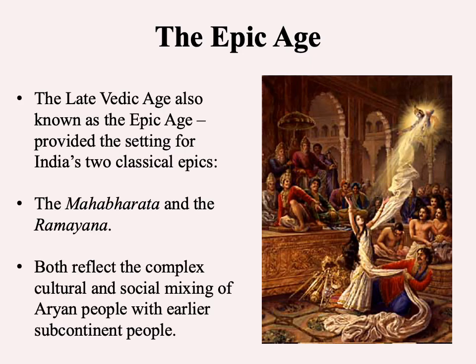The late Vedic age is also sometimes referred to as the epic age, partly because two of the most important epics in Vedic literature are set during this period: the Mahabharata and the Ramayana. The Mahabharata is one you can actually find in bookstores — one of those books that sits on a learned individual's shelf but never actually gets read. It's probably one of the more famous texts related to Hinduism. The foundations for what will become Hinduism are starting to be laid. Both texts reflect the complex cultural and social mixing of Aryan people with the earlier inhabitants, some of whom are being pushed further south and some of whom are intermixing with the Aryan people.